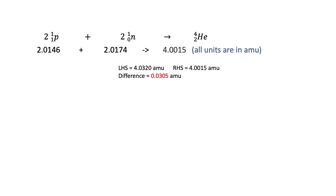As you can see, the total mass on the left-hand side is not the same one as on the right-hand side of this equation. We are missing 0.0305 AMU. So what causes this mass deficit?